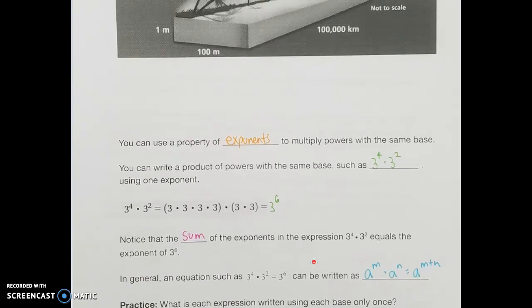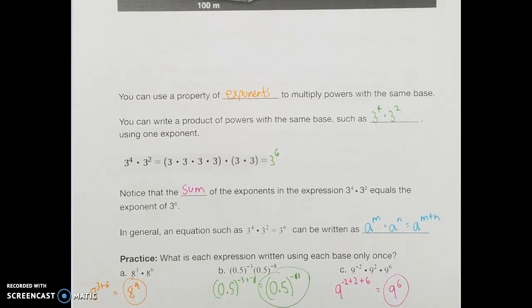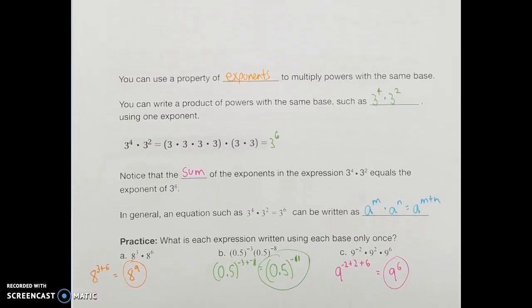In general, that same rule applies: if I'm multiplying two powers with the same base a, I just add those exponents together to get my result. So in the last question, with a 4 and a 2, I added those together to get 3 to the 6th. See if we can use that in these next few questions.